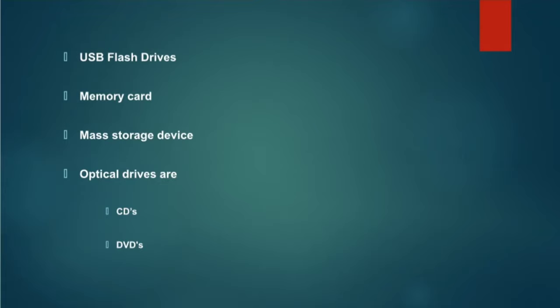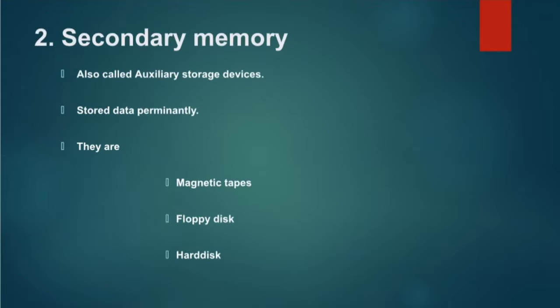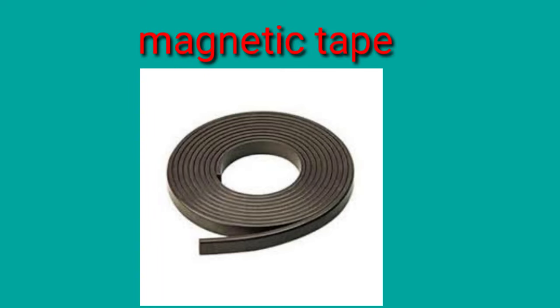Magnetic tapes are available in the form of cassettes and reel cartridges. Data from the magnetic tape can be accessed sequentially. The data is stored in the form of records. These memories are cheap, compact in size, light in weight, can store large amounts of data, and use less power. However, they are much slower and are easily damaged by heat, dust, and mishandling.